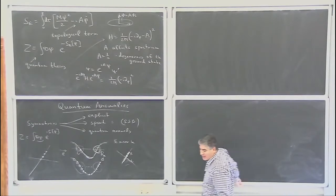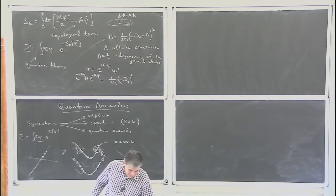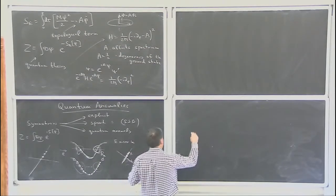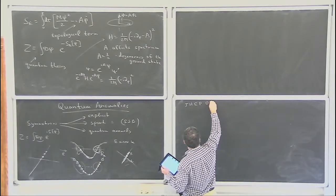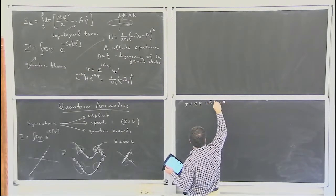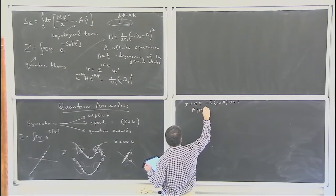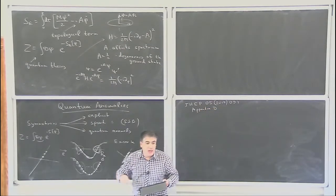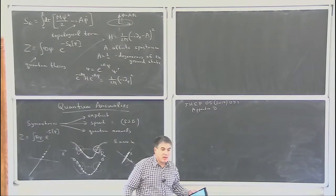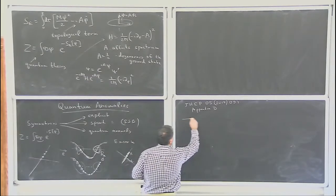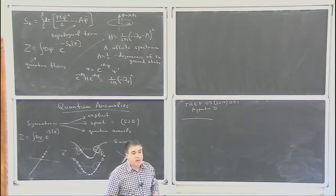Let me give you one example of how anomaly appears in the particle on the ring, and I'll give it as an exercise. If you want to see this exercise solved, look at the paper by Gaiotto, Kapustin, Seiberg, and Willett, Appendix D. The paper is about QCD and using anomaly structures to fix some phase diagram of QCD. In Appendix D they specifically describe the QCD anomaly for a particle on the circle.